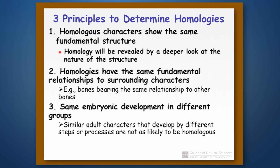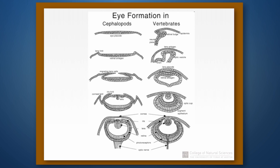The third way we can decide whether things are homologies is by looking at whether they have the same overall embryonic development. Similar adult characters that develop by different steps or processes are not as likely to be homologous as ones that develop the same way. For example, eyes have evolved more than once, and we can tell this because they develop differently. On the left we see the steps for a cephalopod eye — squids and octopus — while on the right, the vertebrate eye develops very differently, suggesting these eyes are not homologous with each other.